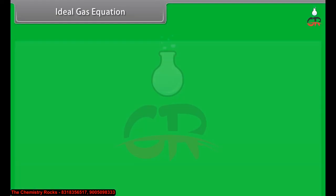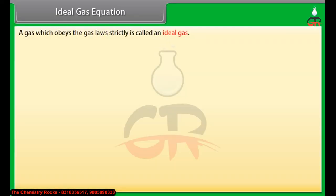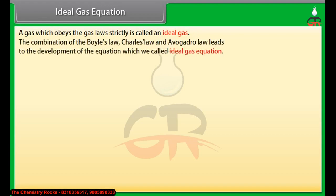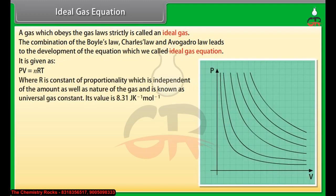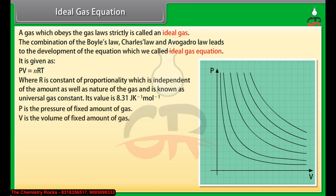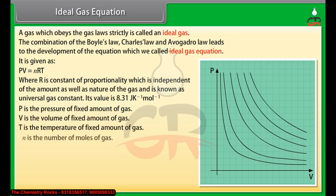Ideal gas equation: A gas which obeys the gas laws strictly is called an ideal gas. The combination of Boyle's law, Charles' law, and Avogadro's law leads to the ideal gas equation: PV = nRT, where R is the universal gas constant, independent of the amount and nature of the gas, with a value of 8.31 J/K/mol. P is the pressure, V is the volume, T is the temperature, and n is the number of moles of gas.